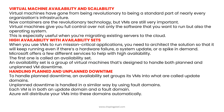High availability with availability sets. When you use VMs to run critical applications, you need to architect the solution so that it will keep running even if there is a hardware failure, a system update, or a spike in demand. Microsoft offers a few different services to help with high availability. The first one is called an availability set — a group of virtual machines designed to handle both planned and unplanned VM downtime.